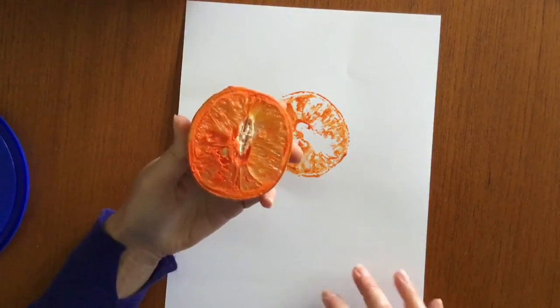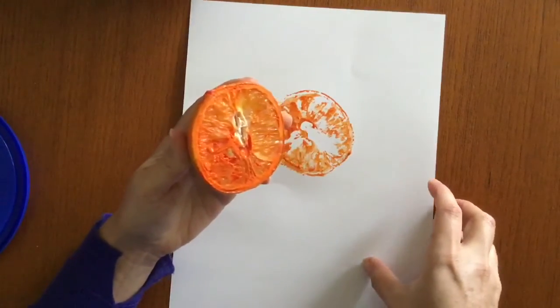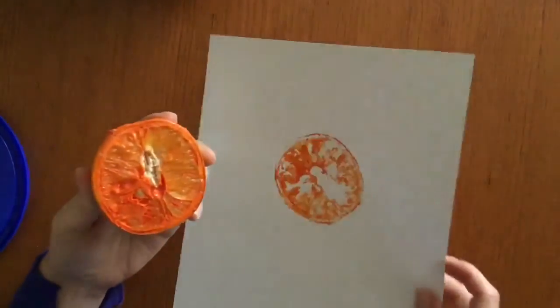Now because you've put paint on this you can't eat it. You can wash it off and maybe cut it off and eat the rest of the orange but don't eat the paint. Just wanted to make that clear.